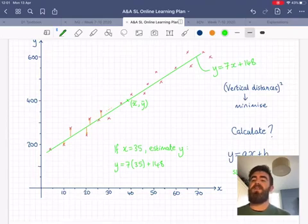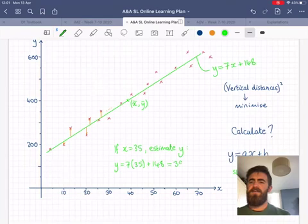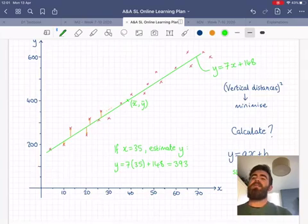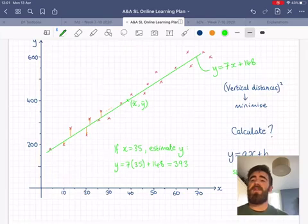So we plug in 35 and what we get is 393. And because there's just a strong correlation and none of the points are on the regression line, we can't say for certain that it will be exactly 393. All we can say is that that's our best guess.